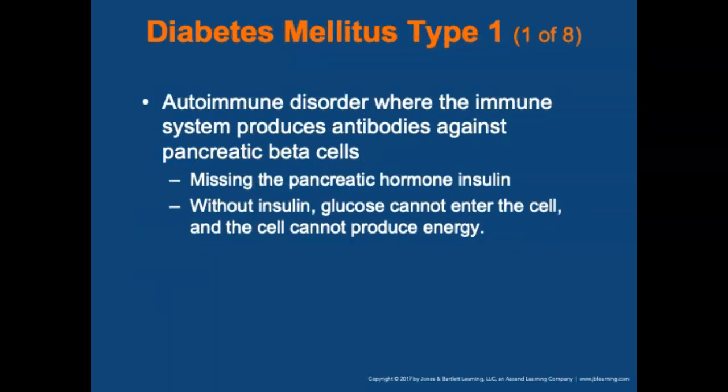Diabetes mellitus type 1 is an autoimmune disorder in which the immune system produces antibodies against the pancreatic beta cells, meaning the pancreatic hormone insulin is missing. Without insulin, glucose cannot enter the cell and the cell cannot produce energy. Essentially, the immune system destroys the pancreas's ability to produce insulin.